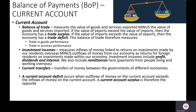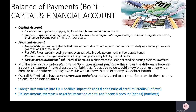The current account looks at inflows and outflows of money linked to incomes. The capital and financial account looks at investments — investments coming into our economy versus investments going out. If foreign people invest into the UK economy, that is a positive impact — an inflow of money. If British economic agents invest overseas, that's a negative impact — money leaving our economy.